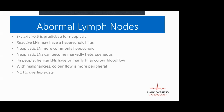In people, benign lymph nodes primarily have hilar color blood flow, whereas with malignancies the color flow seems to be more peripheral. I don't think that has been transferred into animals yet, but it'd be interesting to see if anyone does research on that. I would also say that overlap does exist between reactive and neoplastic lymph nodes.